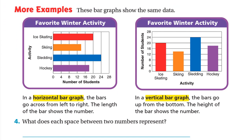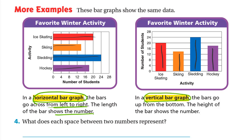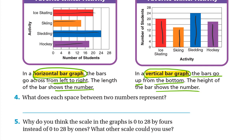Amy would have read 14 books. Now, these bar graphs show the same data but in different orientations. In a horizontal bar graph the bars go across from left to right. In a vertical bar graph the bars go up from the bottom, and the height of the bar shows the number.